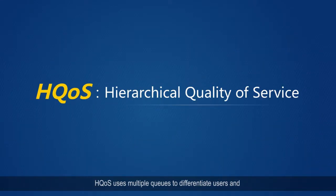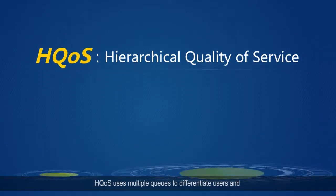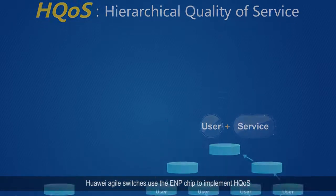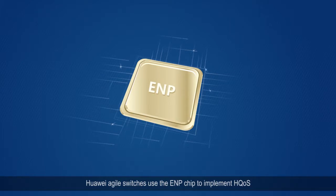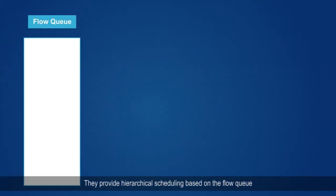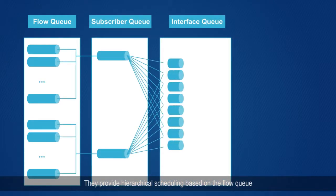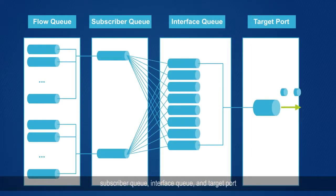HQoS uses multiple queues to differentiate users and services and to provide fine-grained service quality. Huawei agile switches use the ENP chip to implement HQoS, providing hierarchical scheduling based on the flow queue, subscriber queue, interface queue, and target port to ensure service experience of high-priority users.